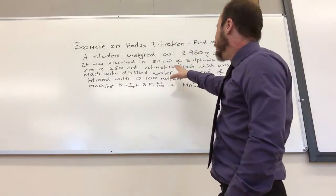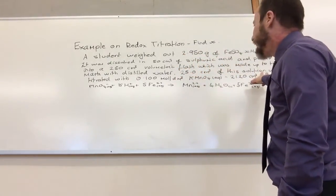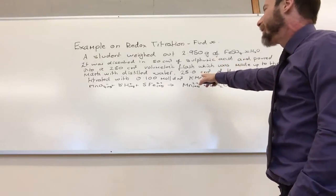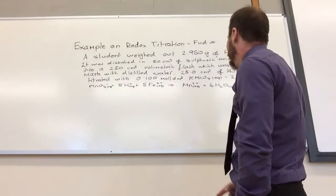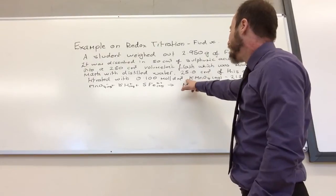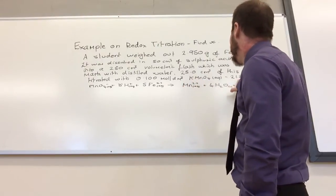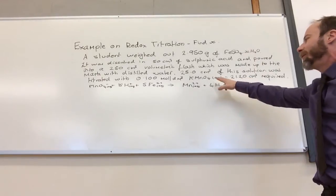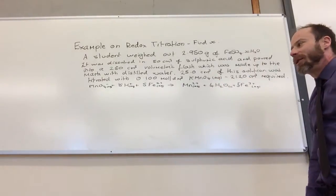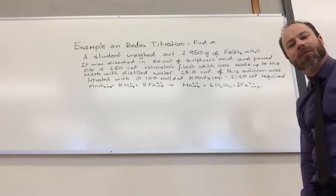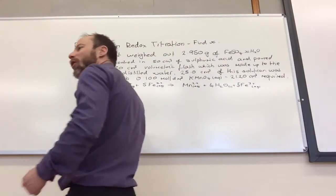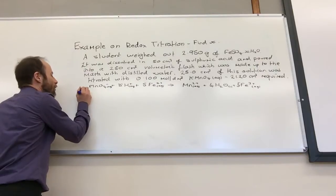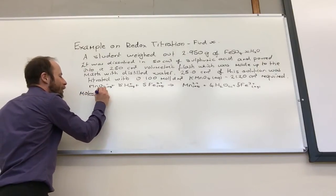Put it into a volumetric flask and made it up to the mark of distilled water. We then took 25 cm³ of this solution and did a titration with potassium manganate, and we needed 21.20 cm³ of this. There's the equation. What's the first thing we always do? We always find the moles of something. What can we find the moles of?